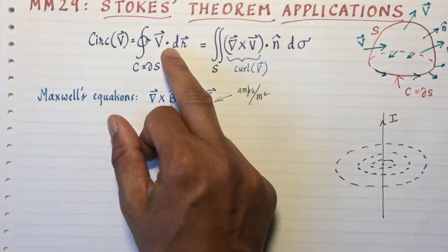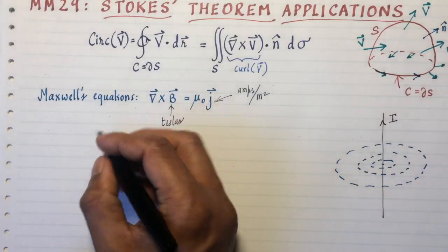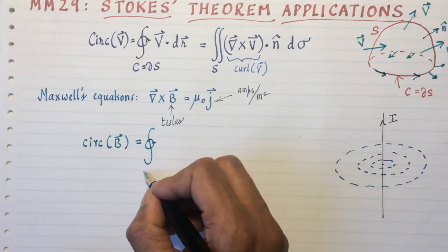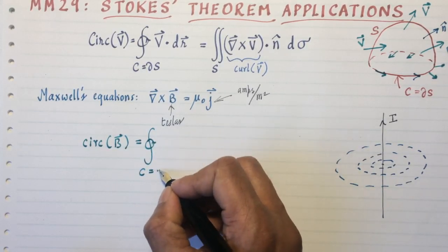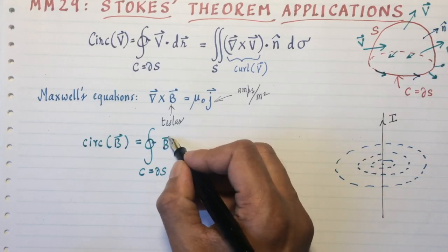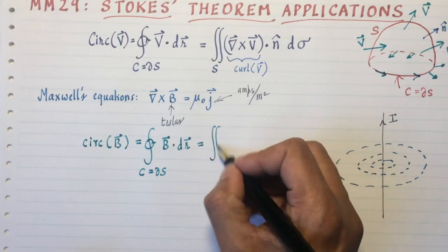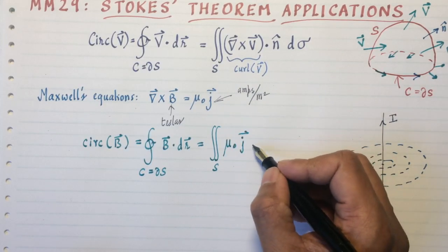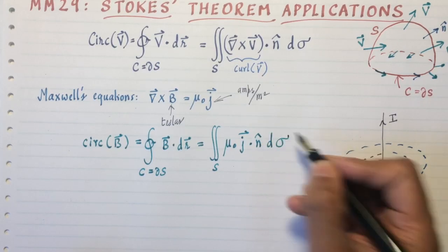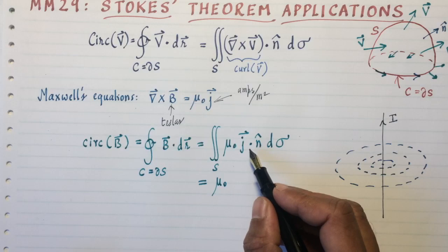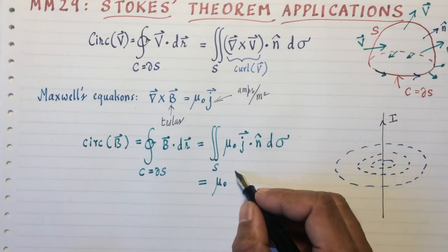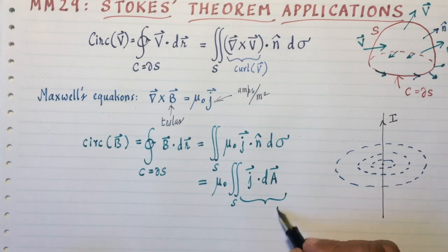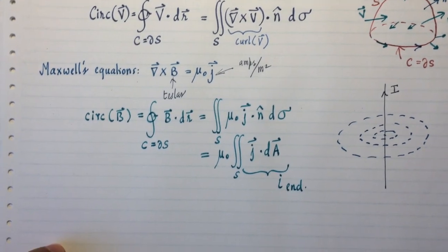So, you can substitute that there, if you put V equals B. I'm going to get the circulation of the magnetic field B, which is going to be the integral over the boundary of the surface, B dot dr equals the double integral over S, curl of B, for which I'm going to write mu naught J dot n d sigma. What's usually done in elementary grades is you recognize dot n d sigma as dA, and you write this as j dot dA, and you call this the enclosed current.